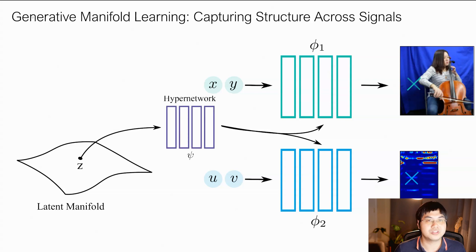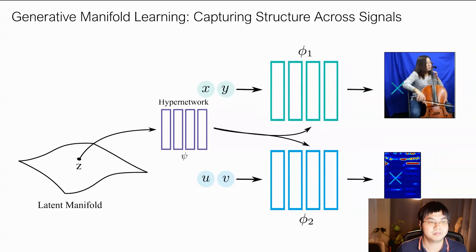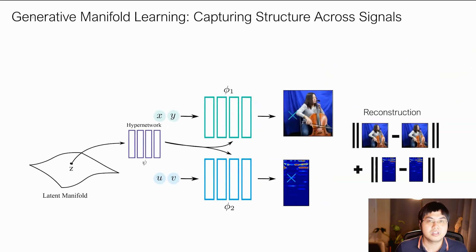In this work, we propose to utilize a hyper network which takes as input the latent and maps it directly to the weights of the neural field for the image as well as for the spectrogram. To learn a manifold which covers the entire data distribution, we may utilize an auto-decoding objective where, for every single data sample in our training dataset, we learn a separate latent and train each latent to reconstruct the corresponding image and spectrogram.